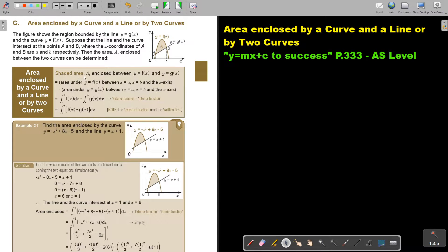So the shaded area A enclosed by Y equals FX and Y equals GX is the area underneath Y equals FX, the one that's on top, minus the area underneath GX. So you subtract. You take that whole area and then you subtract that area and then you're left with that one. So it's the exterior, that top function, minus the interior function. Now, the exterior function must be written first, the top one.